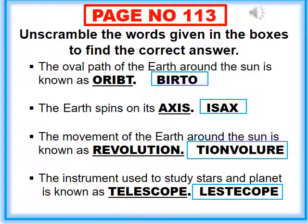The oval path of the earth around the sun is known as orbit — write the correct spelling. The earth spins on its axis — write the correct spelling of axis. The movement of the earth around the sun is known as revolution — write the correct spelling of revolution. The instrument used to study stars and planets is known as telescope — write the correct spelling of telescope.